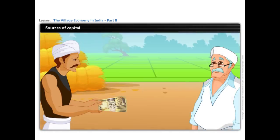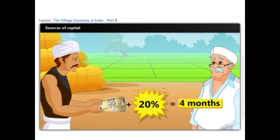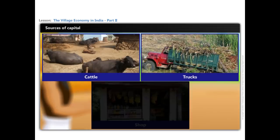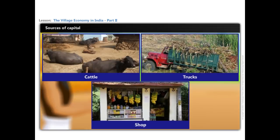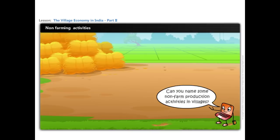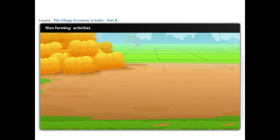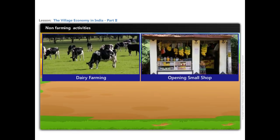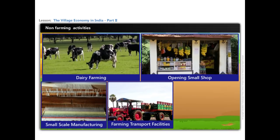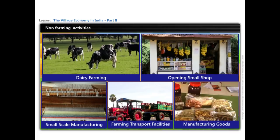Some large farmers even offer loans to small farmers, as we saw in the case of Humtu. Some farmers might also use their savings to buy cattle, trucks, or to set up shops, which gives rise to other non-farming activities. Can you name some non-farm production activities in villages? Dairy farming, opening small shops, establishing small-scale manufacturing, and providing transport facilities for farming and manufacturing goods are some of the non-farm activities in villages.